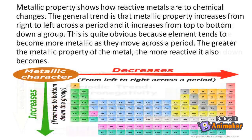Metallic property shows how reactive metals are to chemical changes. The general trend is that metallic property increases from right to left across a period, and it increases from top to bottom down a group. This is quite obvious because elements tend to become more metallic as they move across a period. The greater the metallic property of the metal, the more reactive it also becomes.